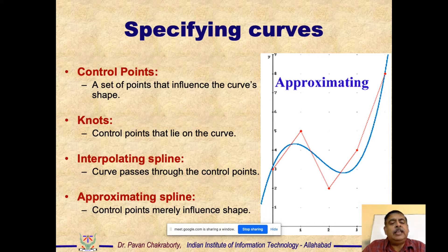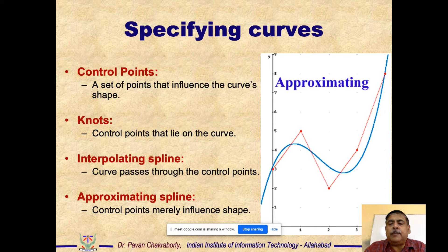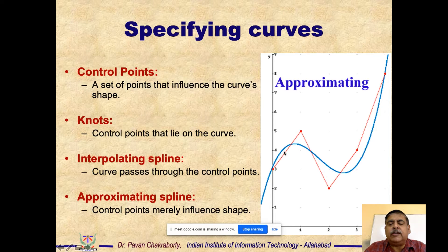Control points are a set of points that influence the curve's shape but need not be part of the curve — they pull the curve toward themselves through derivatives or other methods. Knots are control points that lie on the curve itself. In the approximating spline shown, the first and last points may lie on the curve while all other points are just control points, and the curve finds a median path between them.